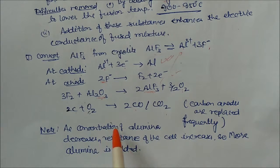Here one more important thing: if the concentration of alumina is decreasing, due to decrease of alumina, resistance of the cell increases. So we are adding alumina regularly in this tank frequently. So carbon and alumina is added frequently and finally we get molten alumina.